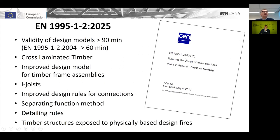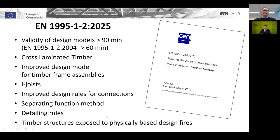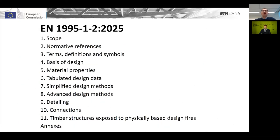The main highlights for this revision are: we are able to extend the validity of design models up to 90 minutes and sometimes up to two-hour fire resistance. We include new rules for CLT. We improve the design model for timber frame assemblies. We include a new model for I-joists. We improve design rules for connections. We improve the separating function method. We give more detailing rules, and we also revise the design for timber structures exposed to physically based design fire. We are going a little beyond our mandate, but it's a unique opportunity to evolve the new Eurocode in the best way.